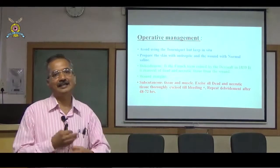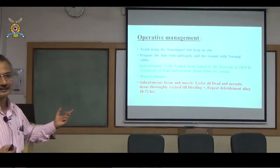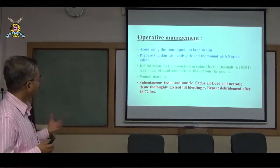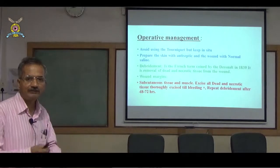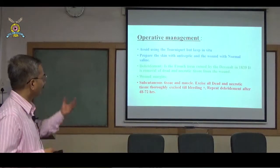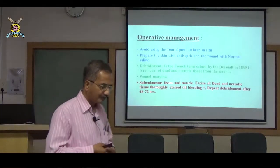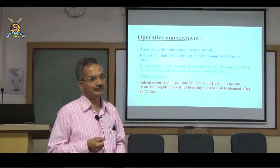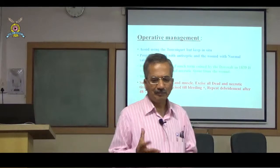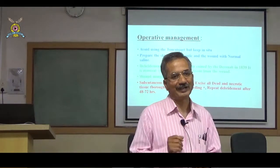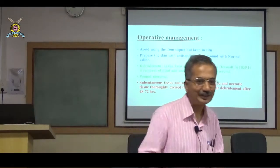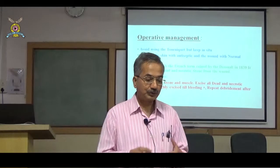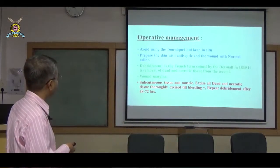Remove all loose subcutaneous tissue and fascia lying loose in the wound. Use pulse lavage — a pulsed irrigation system — to wash out foreign material and dead tissue. Avoid forceful irrigation as this drives contaminants deeper into muscle and tissue. Pulse lavage is sufficient.